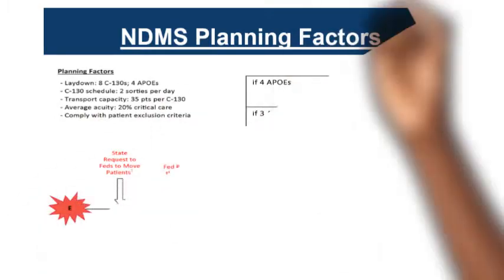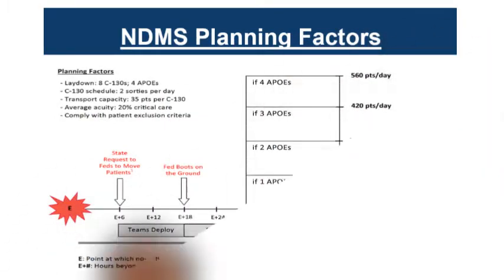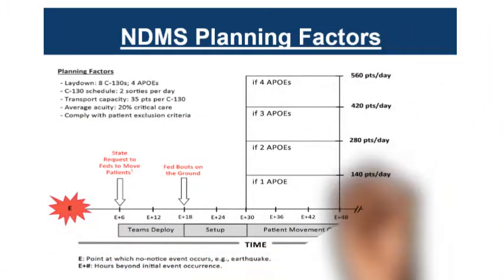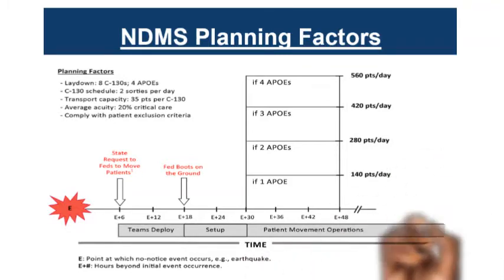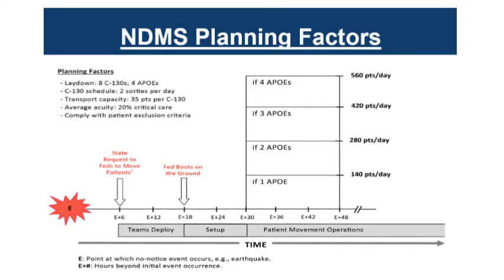Key NDMS planning factors: once the state puts in a request, there are no federal boots on the ground until about 18 hours in. Once patient movement operations start, they can process approximately 140 patients per day with one base of operations, and that capacity doubles with every additional base of operations.